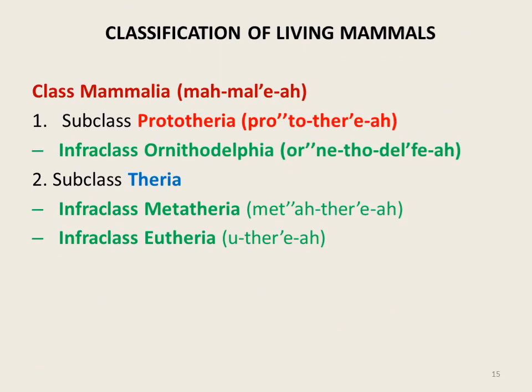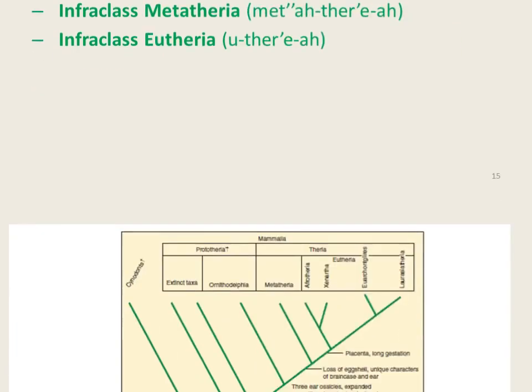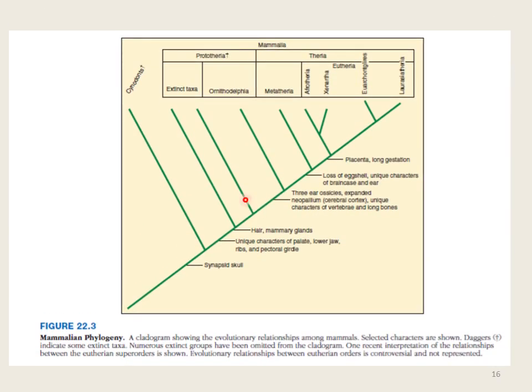Class Mammalia is divided into two subclasses. The first is subclass Prototheria, which comprises the infraclass Ornithodelphia, commonly called monotremes. As the name suggests, members possess a cloaca — a single opening for excretory, digestive, and reproductive products — and they are oviparous, producing offspring by means of eggs. This cladogram represents the mammalian phylogeny showing all the lower taxa in this class; the dagger symbol indicates taxa that are now extinct.